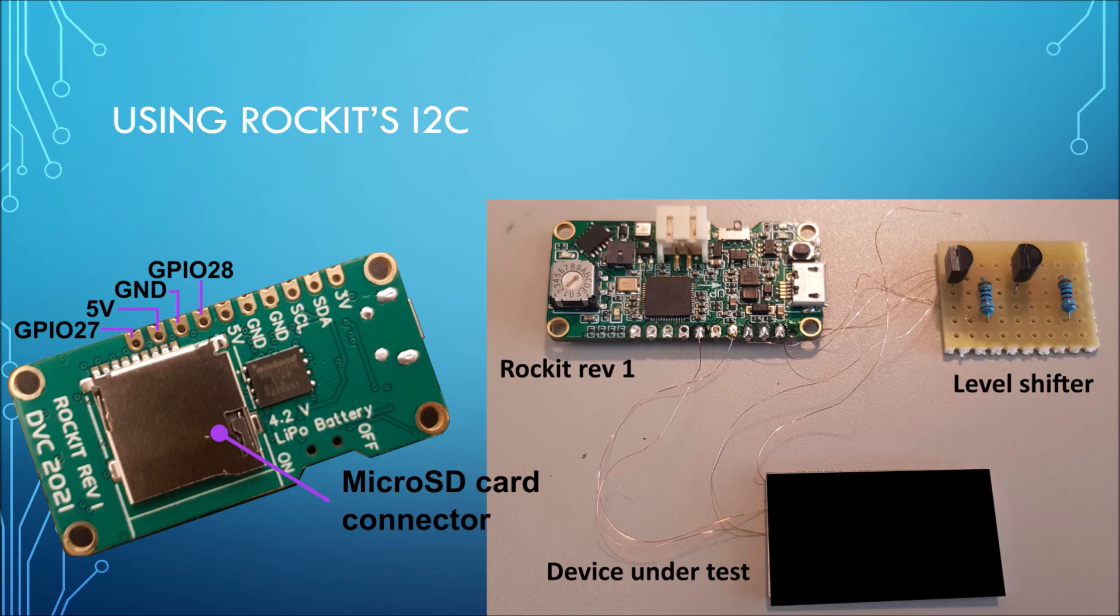The I2C ports are easily available, but the problem is that Rocket is a 3.3 volt device and the device under test is a 5 volt device. So I use a level shifter to convert the digital signals from 5 to 3.3 volts and vice versa.